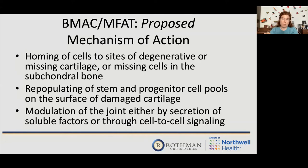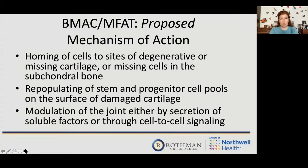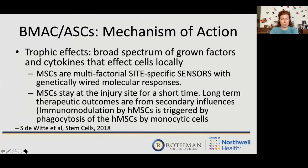The proposed mechanism: these cells signal sites of degenerative or missing cartilage, repopulating stem and progenitor cell pools on the surface of damaged cartilage. We're not injecting the stem and progenitor cells directly — we're putting in precursors that signal the body to bring its own existing stem and progenitor cells, modulating the joint environment through secretion of soluble factors or cell-to-cell signaling. Importantly, for arthritis patients: arthritis is a progressive disease. We can try to slow it down, but even with effective treatment, studies show benefits lasting around 52 weeks. Patients must understand this doesn't fix anything — it can slow progression.